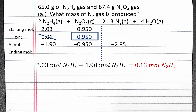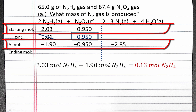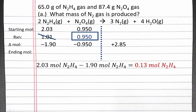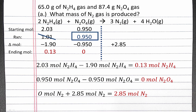To calculate our ending moles, we take our starting moles row plus our change in moles row. For N2H4, we start with 2.03 moles, we lose 1.9 moles, and we have 0.13 moles remaining. For N2O4, we started with 0.95 moles and we lost 0.95 moles, so we have 0 moles remaining of our limiting reagent. And for N2, we started with 0 moles and we've produced 2.85 moles, so we have 2.85 moles of N2 when our reaction goes to completion.